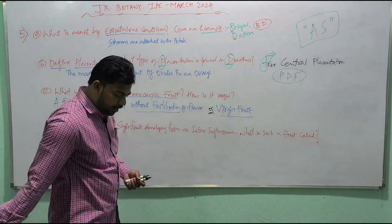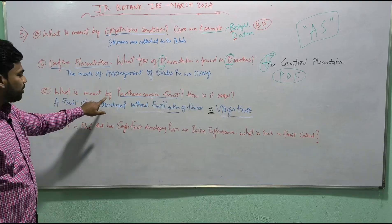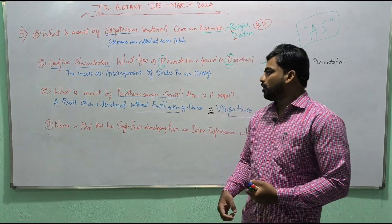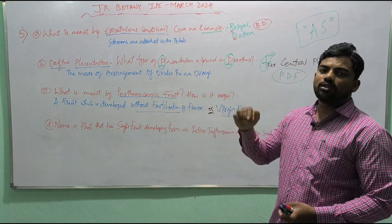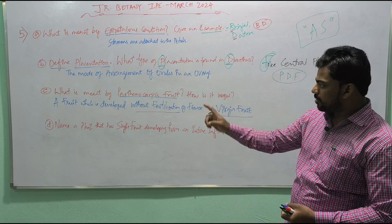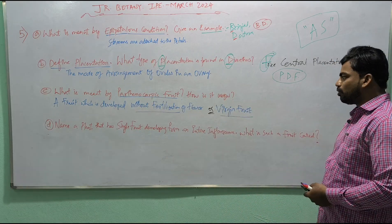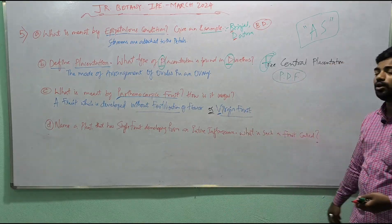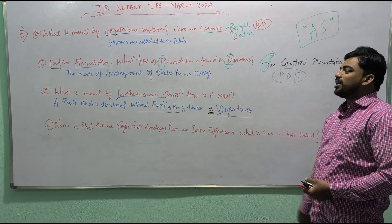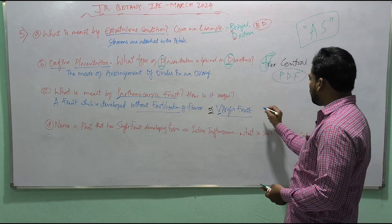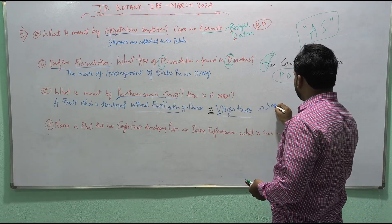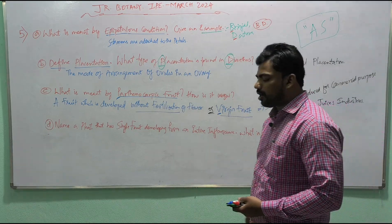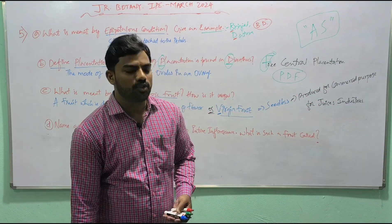A fruit which is developed in the flower without fertilization of the flower is known as a parthenocarpic fruit, also known as virgin fruit. These parthenocarpic or virgin fruits are seedless, as there is no fertilization. They are produced for the commercial purpose of juice industries.